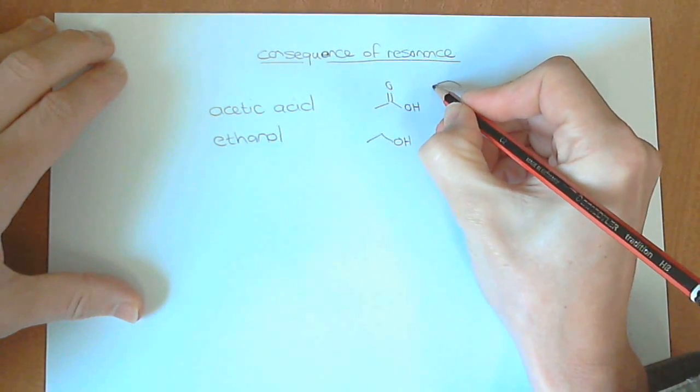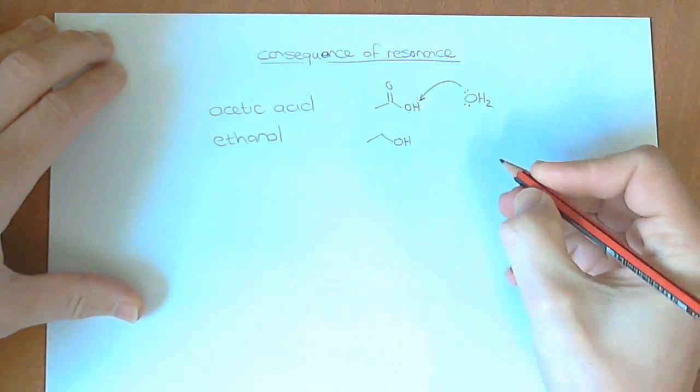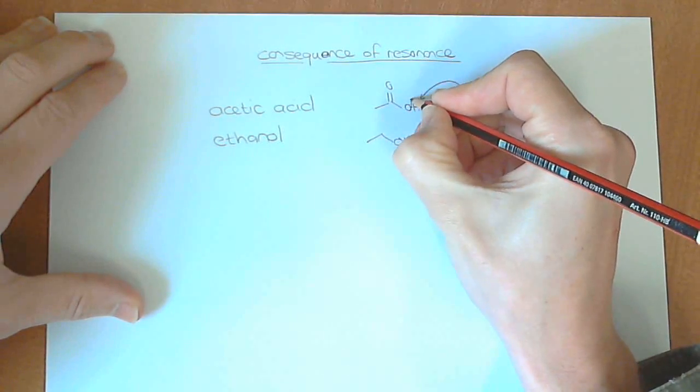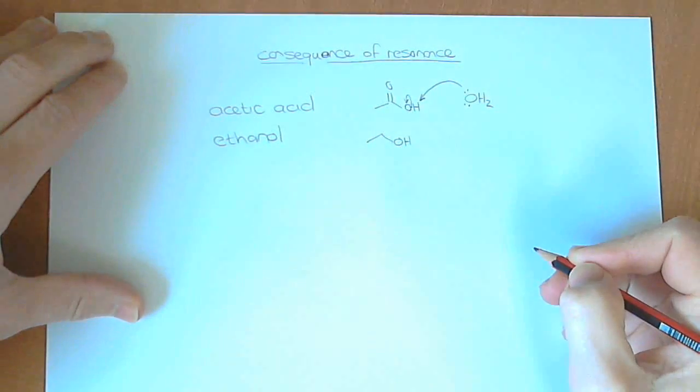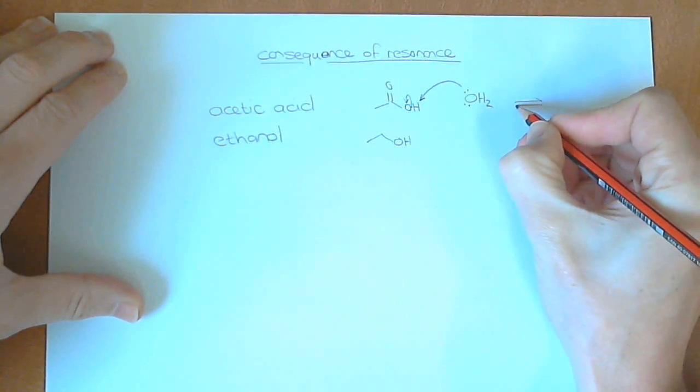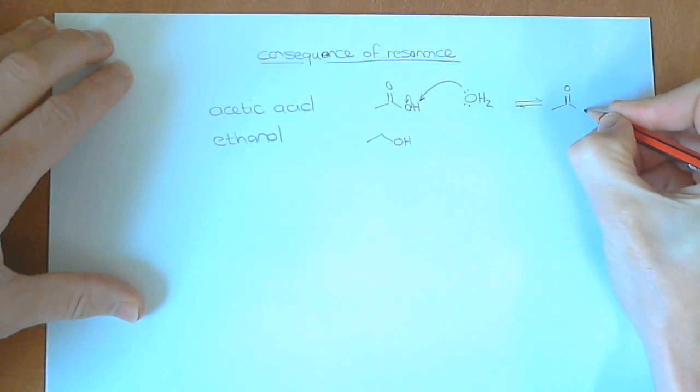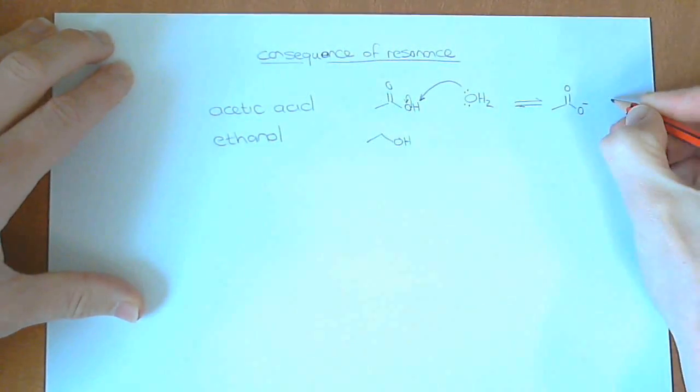So the lone pair of electrons can pick up this proton very easily. There's a little bond in there. It'll go on to this oxygen. Likewise, so if we draw out that little equilibrium over there, we'd end up with the acetate anion, plus H3O+.